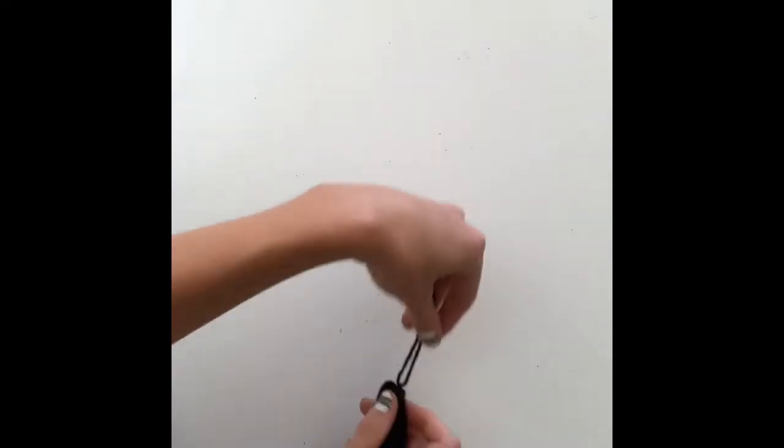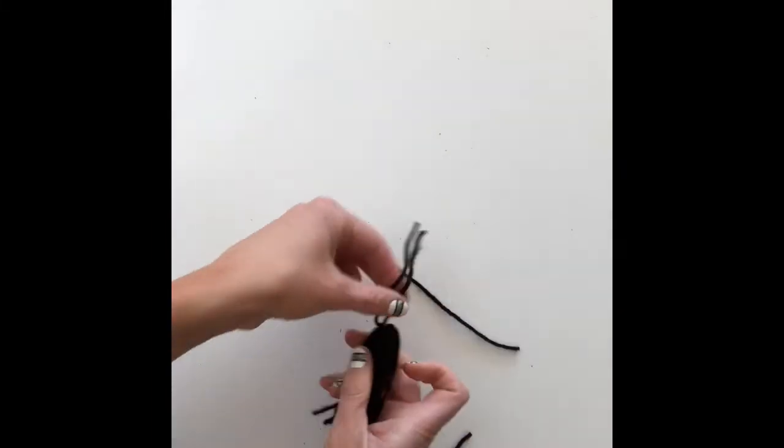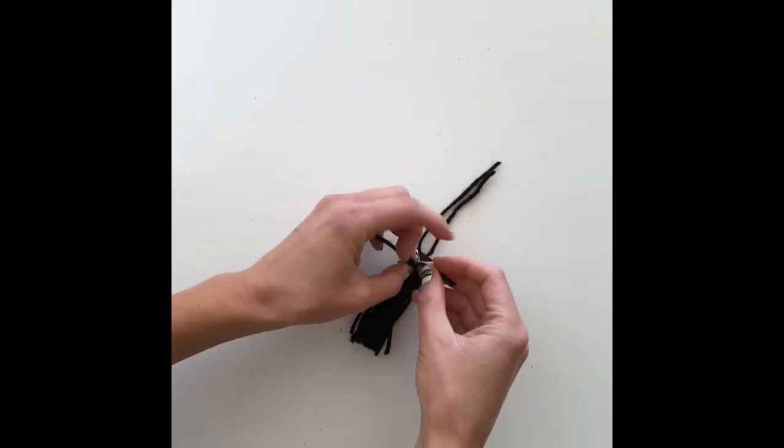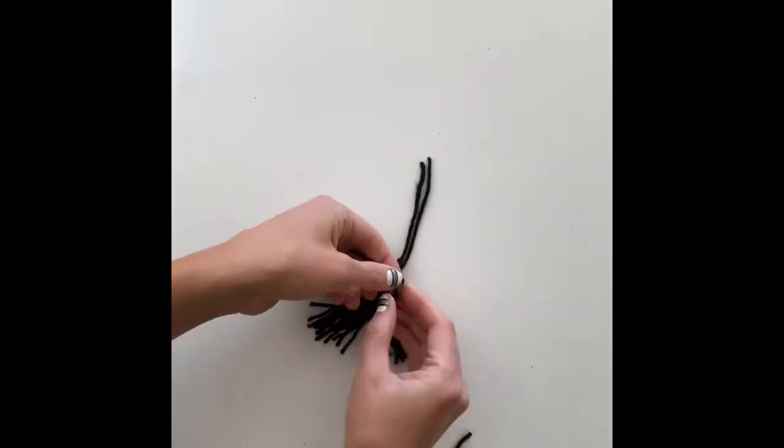To keep your tassel from coming undone, cut another 8 inch section and wrap it about a half an inch below the bulk of your yarn. Tie that in a knot and you should have a finished beautiful little tassel.